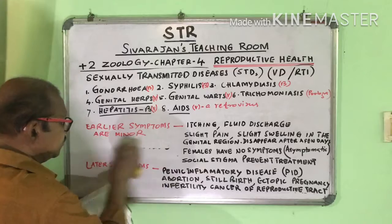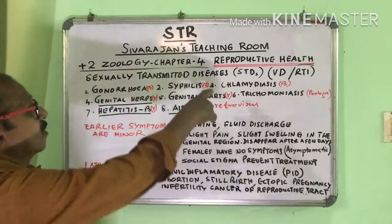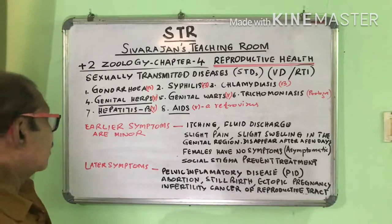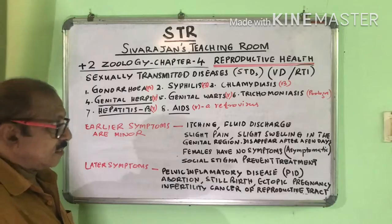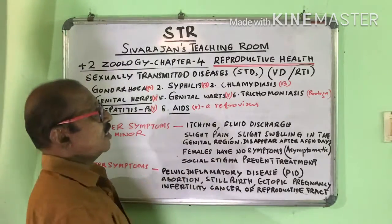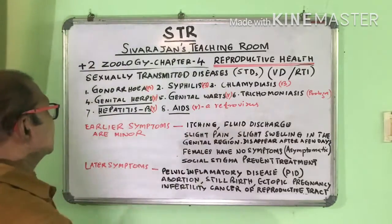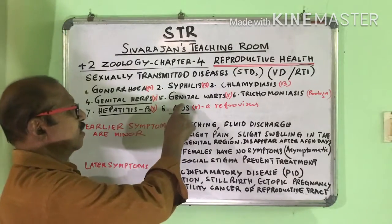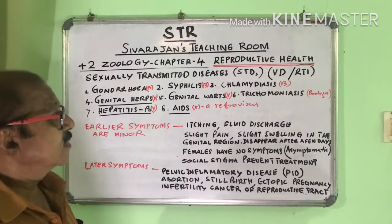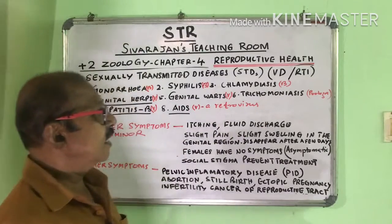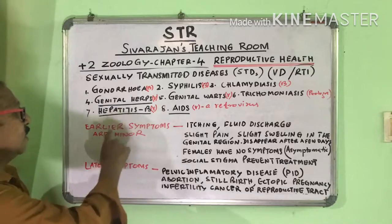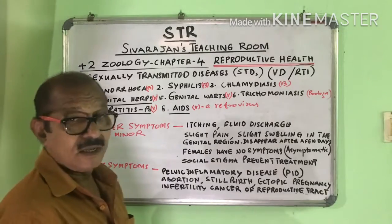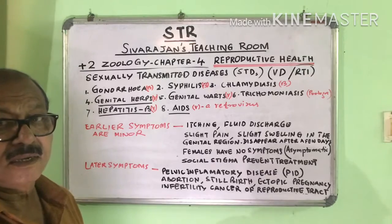Some diseases caused through sexual transmission include: Gonorrhea, Syphilis, Chlamydiasis, Genital Herpes, Genital Warts, Trichomoniasis, Hepatitis B, and AIDS. These are some of the major sexually transmitted diseases — eight diseases in total.